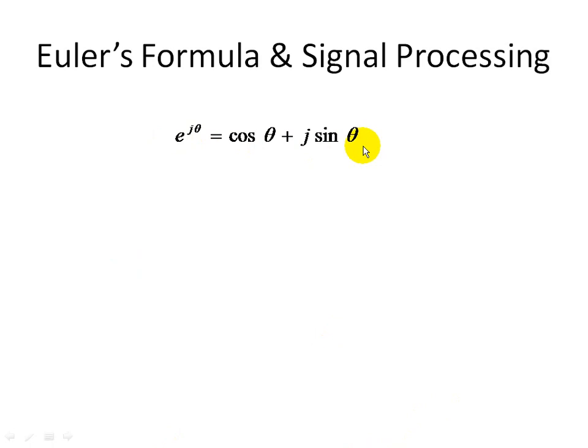Without going into detail of how this was derived, Euler's formula is used very frequently in the application of signal processing. What I want to show is that sines and cosines can be represented as complex exponentials. Since we know from earlier that any function can be represented as cosines and sine functions, it follows that any function can be represented as complex exponentials.